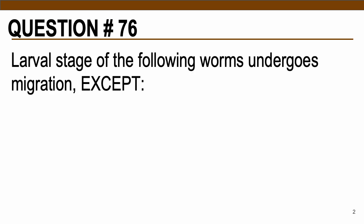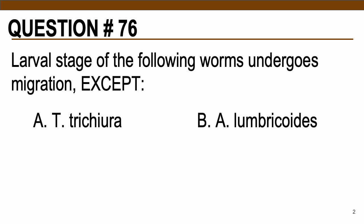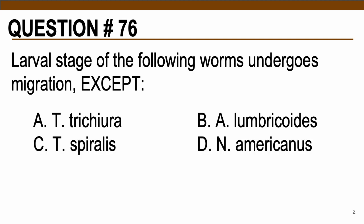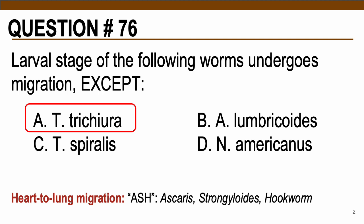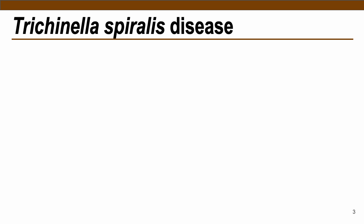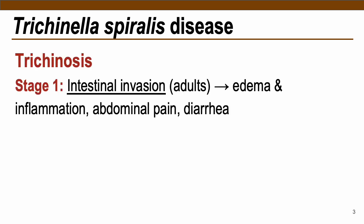The larval stage of the following worms undergoes migration, except for — the correct answer is letter A, Trichuris trichura. Remember, for Ascaris lumbricoides and Necator americanus, which is a hookworm, undergo heart-to-lung migration. So don't forget the mnemonic ASH, which stands for Ascaris, Strongyloides, and hookworm. For Trichinella spiralis, this also undergoes larval migration, with three stages behind the pathology for trichinosis.